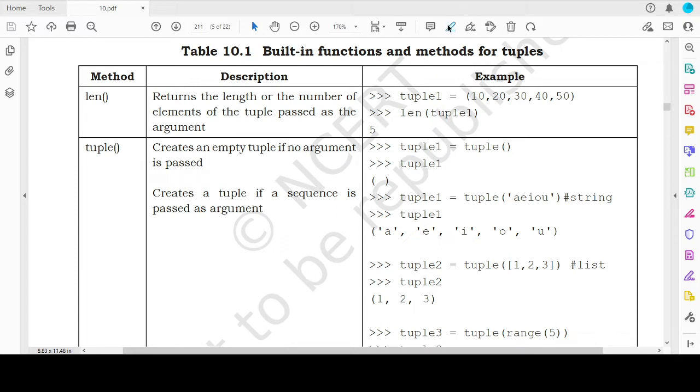The first built-in function is the length function. We have seen this function in the previous videos also. So when you apply the length function on a tuple, it will return the length or the number of elements that are present in that tuple. So suppose we have a tuple with five elements, then the length of tuple will give you the result as five.